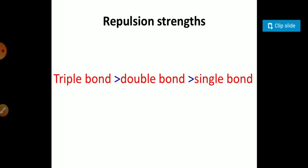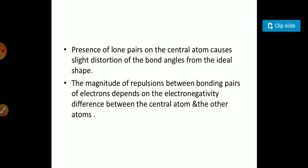The presence of lone pair on the central atom causes slight distortion of the bond angle from the ideal shape. The magnitude of repulsion between the bonding pairs depends on the electronegativity difference between the central atom and the other atoms.